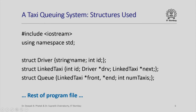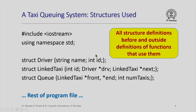Name is of string data type and id is of integer data type. A link taxi is a structure with three members: the id of the taxi which is of integer type; a member drv which stores a pointer to an object of type driver, storing the driver's details; and a member next which points to the next link taxi in the queue, so its type is a pointer to the same structure link taxi. The overall queue has front and end, both pointers to link taxi, and a member num_taxis of integer type counting the total number of taxis currently in the queue. Note that all these structure definitions have been done before and outside the definitions of functions that are going to use them.